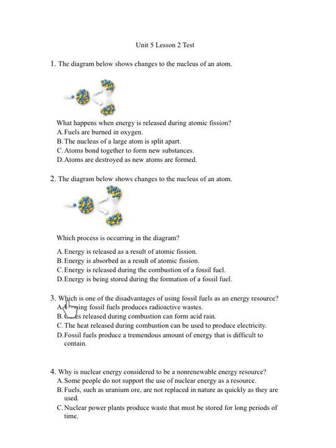Number 3. Which is one of the disadvantages of using fossil fuels as an energy resource? A. Burning fossil fuels produces radioactive wastes. B. Gases released during combustion can form acid rain. C. The heat released during combustion can be used to produce electricity. D. Fossil fuels produce a tremendous amount of energy that is difficult to contain.